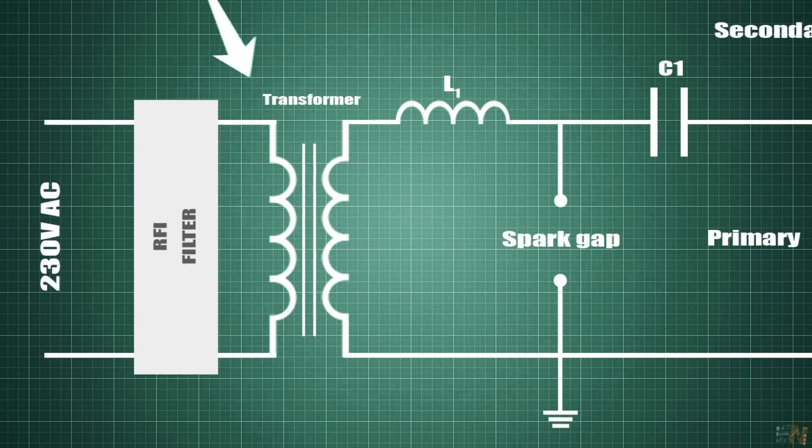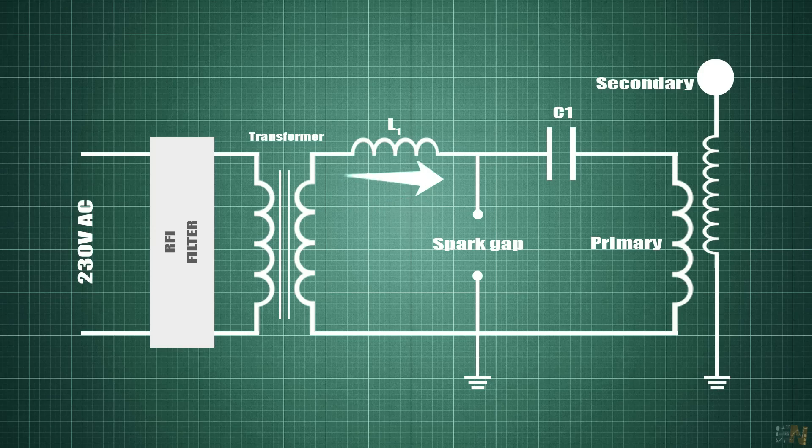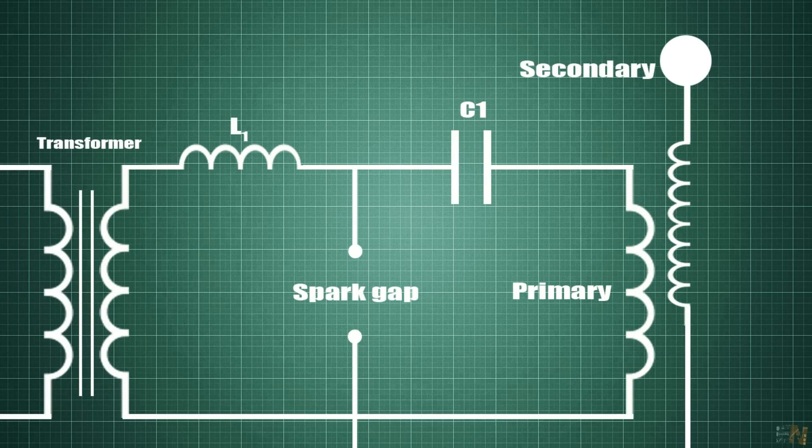That is connected to a transformer that will increase the voltage even more, up to thousands of volts and also separate the two parts of the circuit. That transformer will charge up this capacitor till the voltage is high enough that a voltage arc is created between these two points.